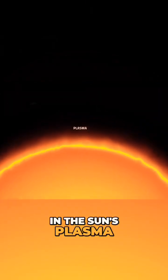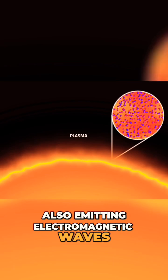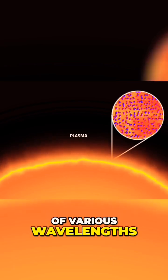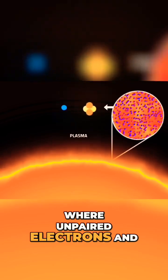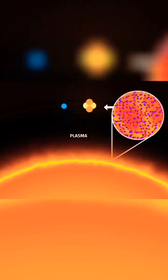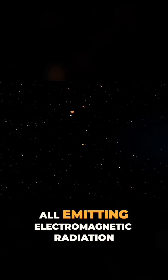In the sun's plasma, countless free electrons vibrate randomly, also emitting electromagnetic waves of various wavelengths. Plasma refers to the part of the sun where unpaired electrons and nuclei exist. Moreover, there are trillions of stars in the universe, all emitting